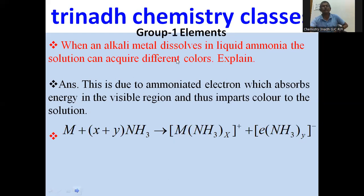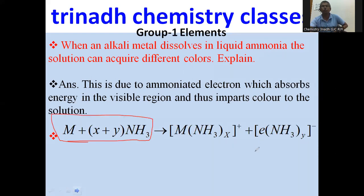Next: when alkali metals dissolve in liquid ammonia, the solution can acquire different colors. This is due to the formation of ammoniated electrons, which absorb energy in the visible region and impart color to the solution. When alkali metal is dissolved in ammonia, ammoniated electrons are formed, which absorb energy in the visible region.